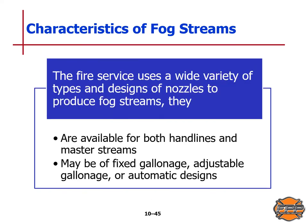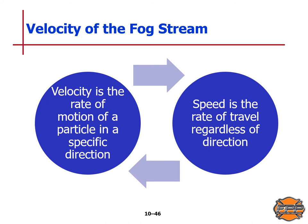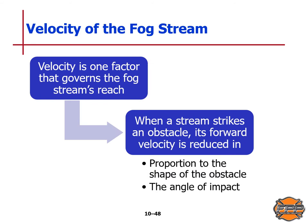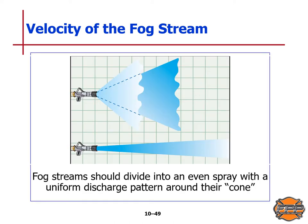The fire service uses a wide variety of nozzle types and designs to produce fog streams. They are available for both handlines and master streams, and may be of fixed gallonage, adjustable gallonage, or automatic designs. Velocity is the rate of motion of a particle in a specific direction, while speed is the rate of travel regardless of direction. The greater the stream's forward velocity, the more air it will move, the quicker it will vent the area, and the farther it will travel before gravity pulls it to earth. Velocity is one factor governing a fog stream's reach; when a stream strikes an obstacle, its forward velocity is reduced in proportion to the shape of the obstacle and the angle of impact.